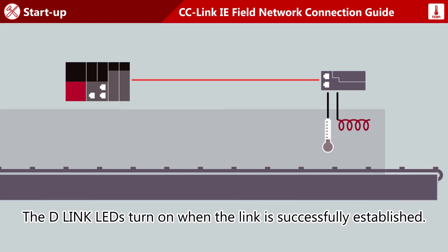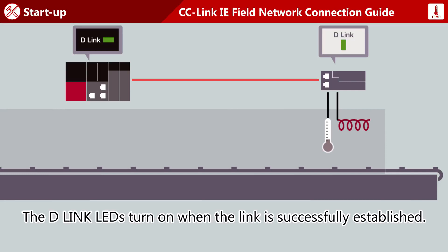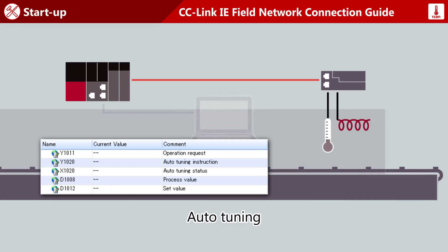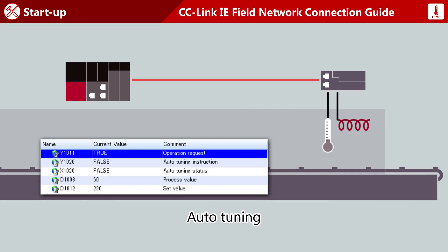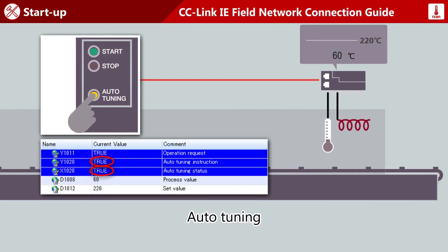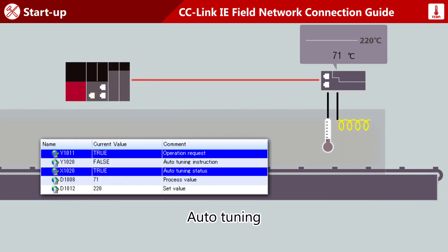If the link has been successfully established, the data link LEDs on the master and remote stations turn on. Turn on the necessary devices to start auto-tuning. Turn on the operation request and the auto-tuning instruction to start auto-tuning.